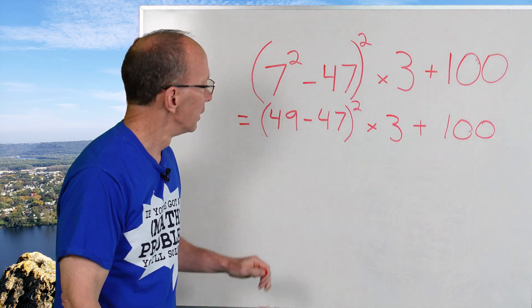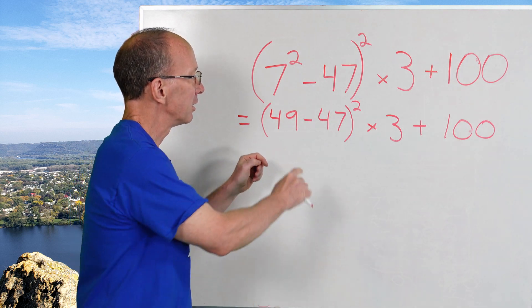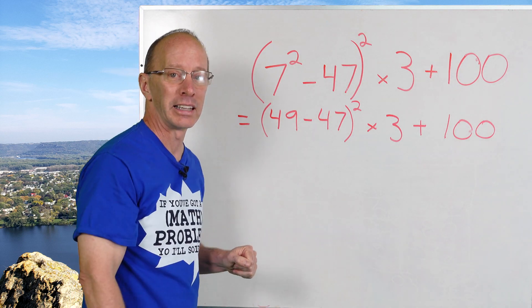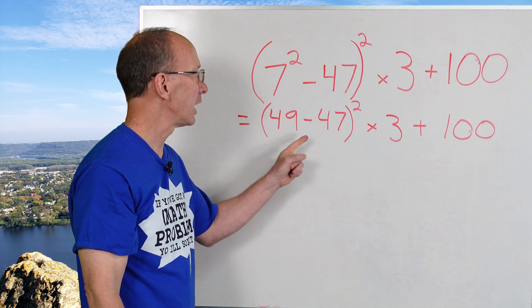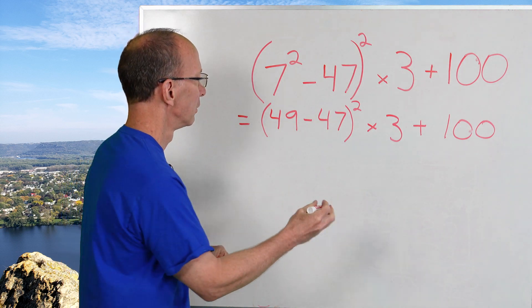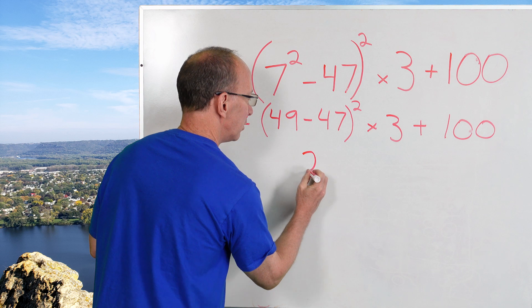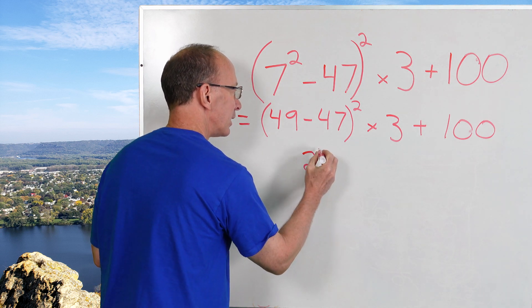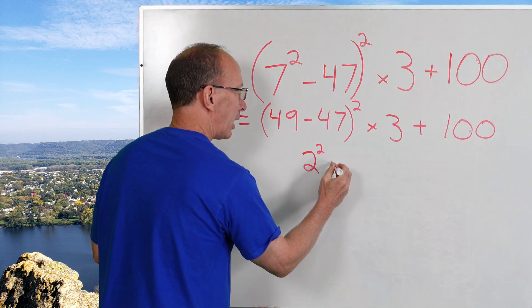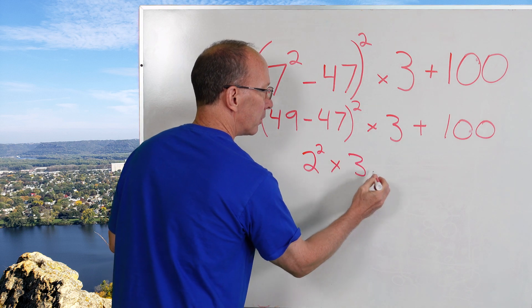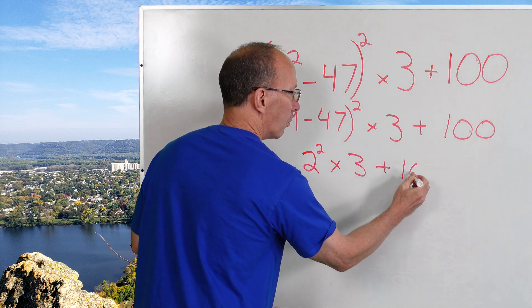Next step. We still need to finish what's inside that parentheses. So 49 minus 47 would be 2. So I go ahead and put 2 right there. And then that'll be to the second power times 3 plus 100.